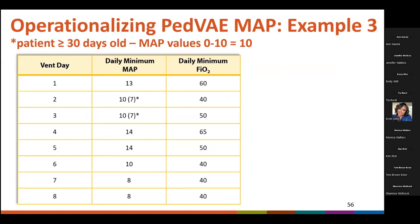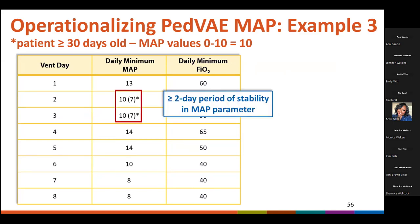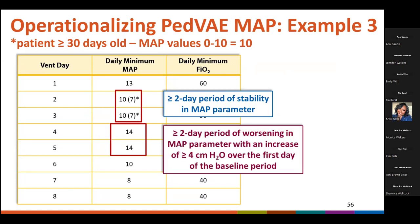In this example, the patient is at least 30 days of age, and there is a period of stability in the daily minimum values in the MAP parameter on vent days two and three. This baseline period is immediately followed by an increase in the daily minimum MAP on vent day four that meets the requirements of at least 4 centimeters of water over the daily minimum value on the first day of the baseline period. Since this increase is sustained for at least two calendar days on vent days four and five, PVAE is met in the MAP parameter.